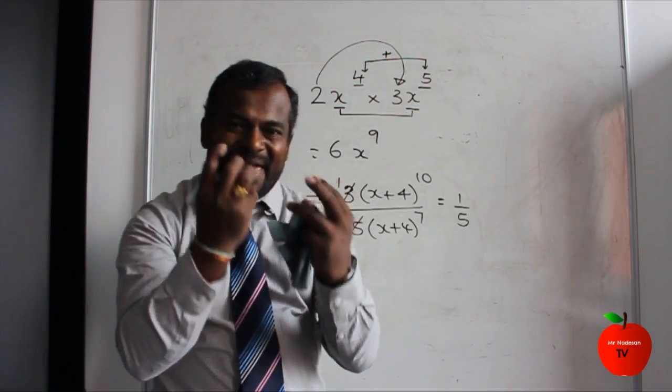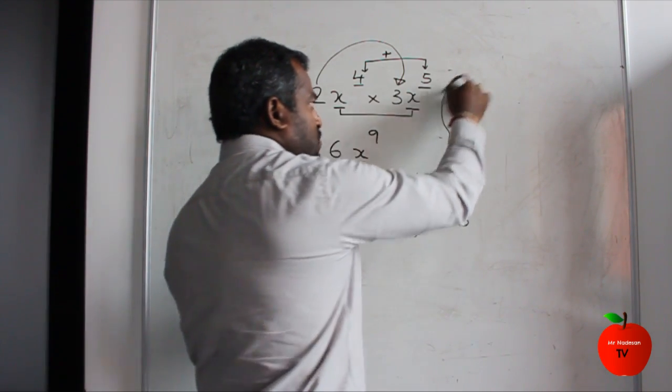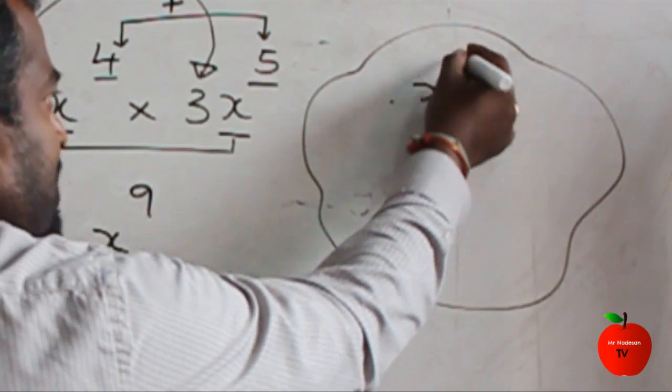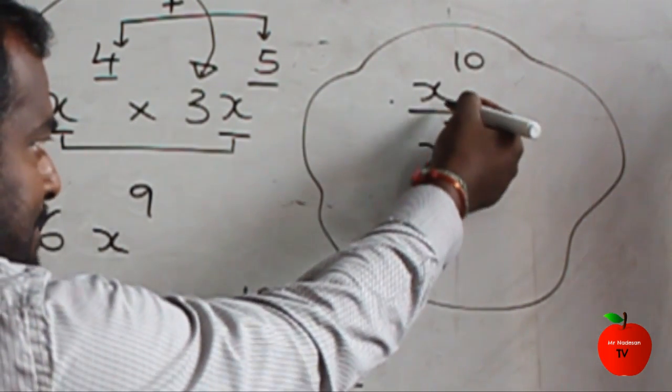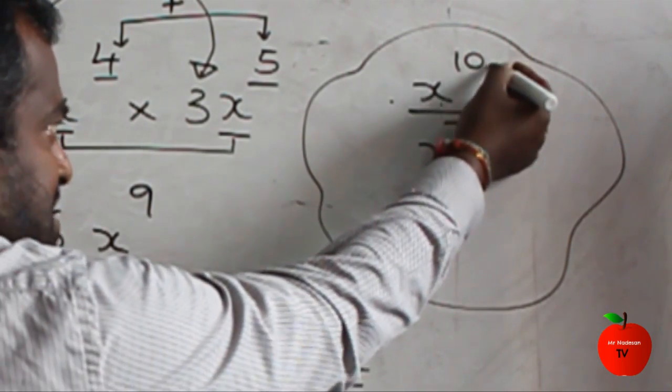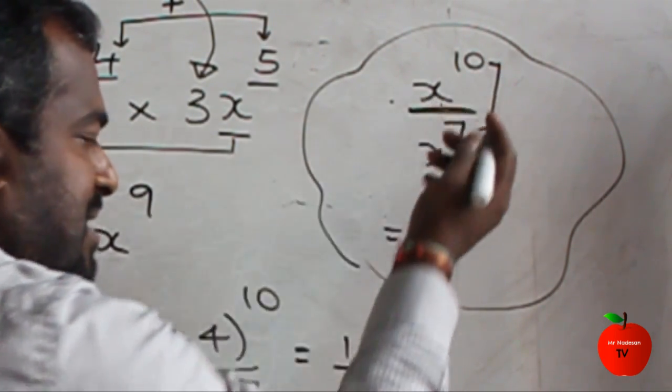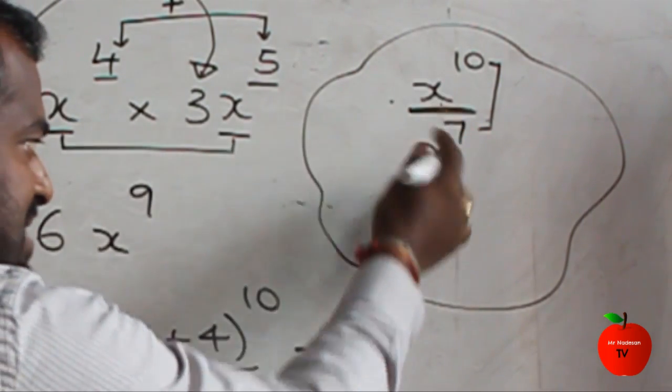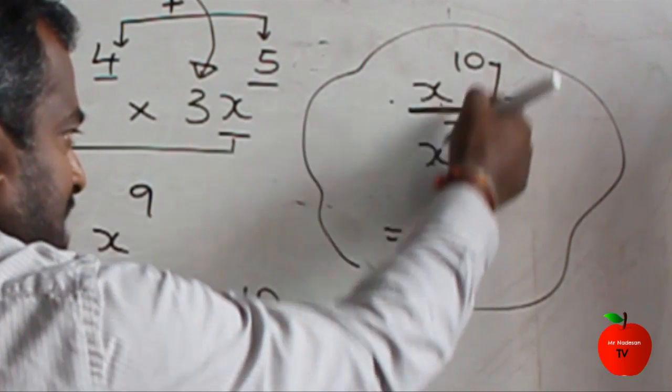So you put 1 over 5 first. Now we think about the base and the power. That's what I was saying earlier very clearly. Think about this one now: x to the power 10 over x to the power 7. You can see the base is x, and 10 and 7 are the powers. The line means division. So when the base is equal and you divide, you subtract the powers.